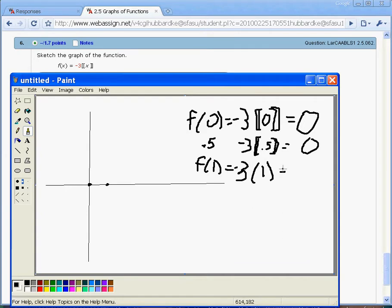1, right? The floor of 3 is 1, so you get out negative 3, right?